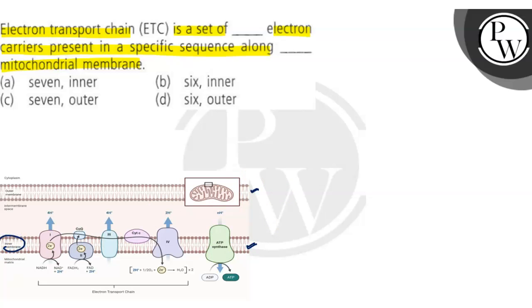It is happening in the inner mitochondrial membrane. And in case of prokaryotes, it happens in the plasma membrane. The process of electron transport begins when the hydrogen ions are removed from NADH and converted into protons and two electrons.